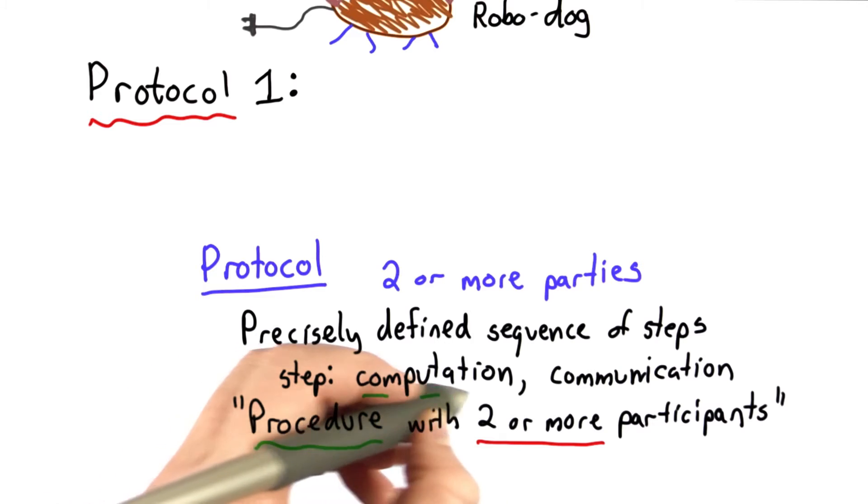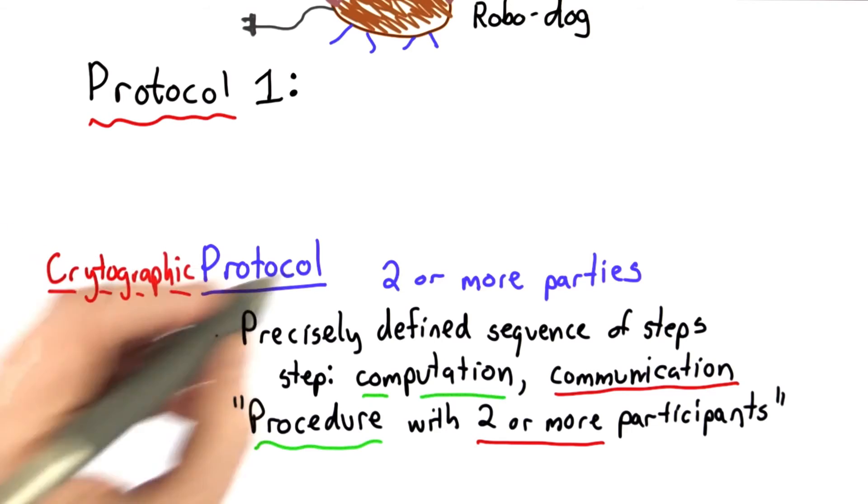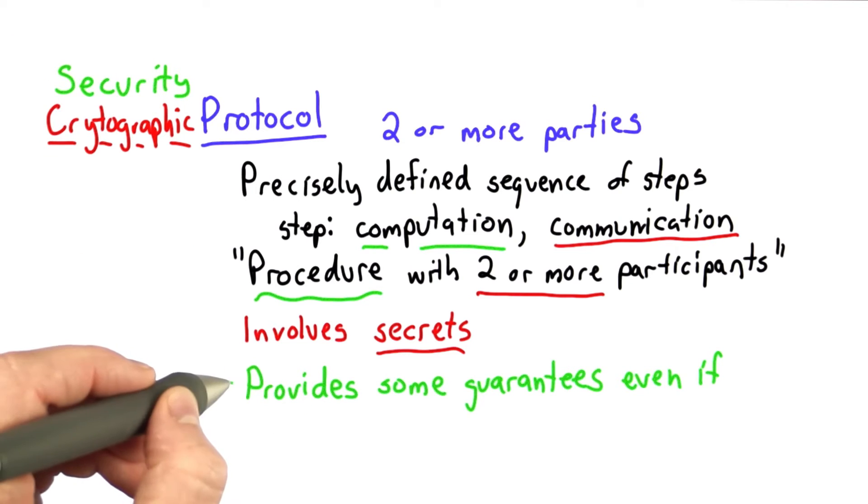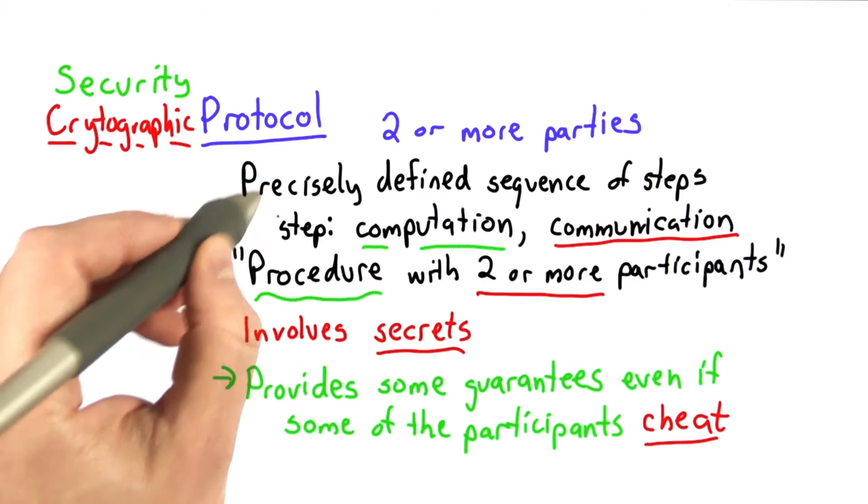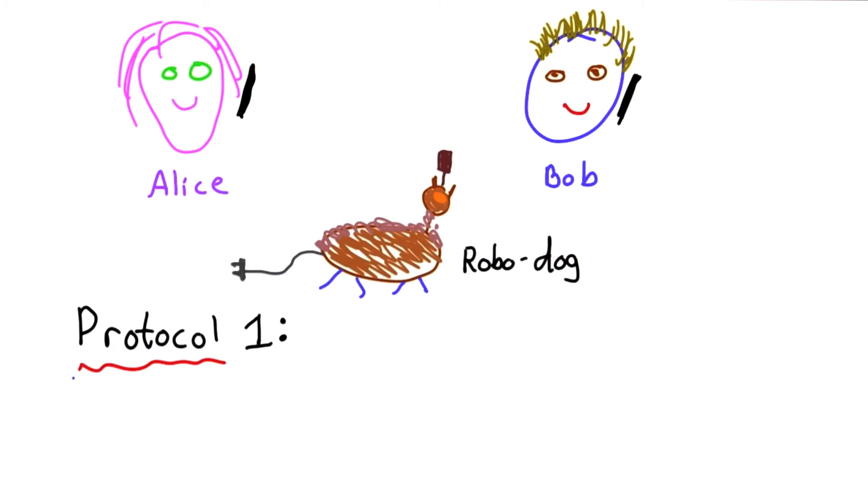In this class, we're mostly concerned with cryptographic protocols, which means one more thing, that it involves secrets. And the usual reason we want to involve secrets is because we want it to be a security protocol. And a security protocol means that it provides some guarantees even if some of the participants cheat, and that means they don't follow the steps as specified.